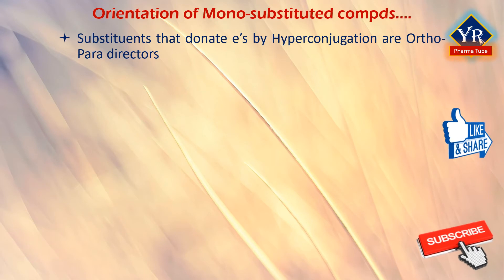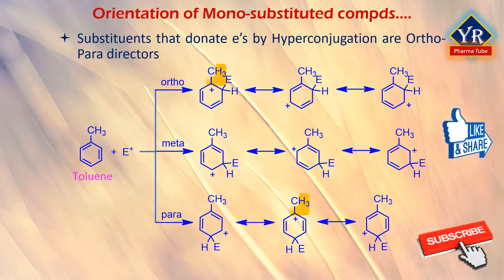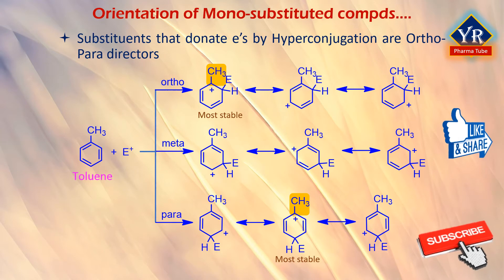Substituents that donate electrons by hyperconjugation are also ortho-para directors. When the substituent is an alkyl group, for example toluene, the resonance contributors highlighted in the figure are the most stable. In those contributors, the alkyl group is attached directly to the positively charged carbon and can stabilize it by hyperconjugation. Therefore, alkyl substituents are ortho-para directors because none of the meta-substituted resonance contributors have a positively charged carbon directly attached to the alkyl group.